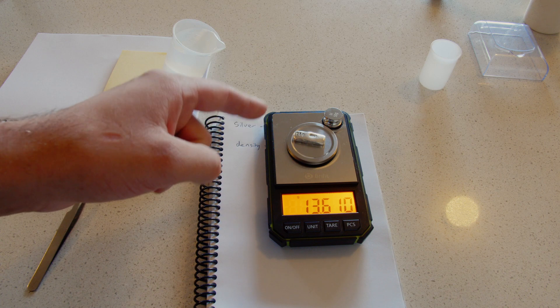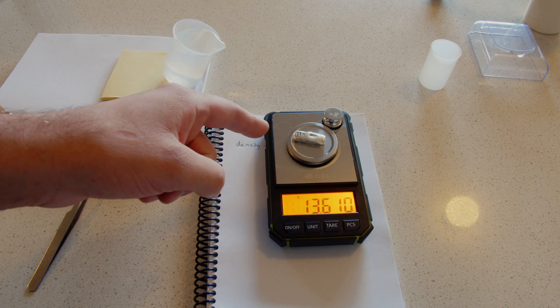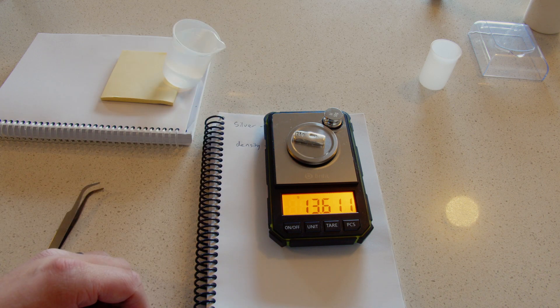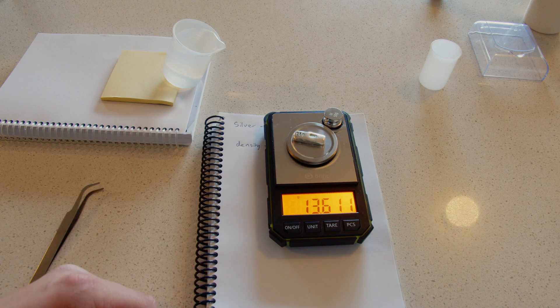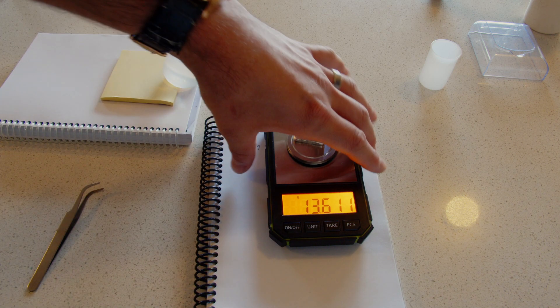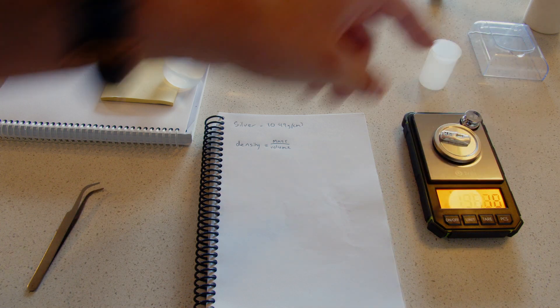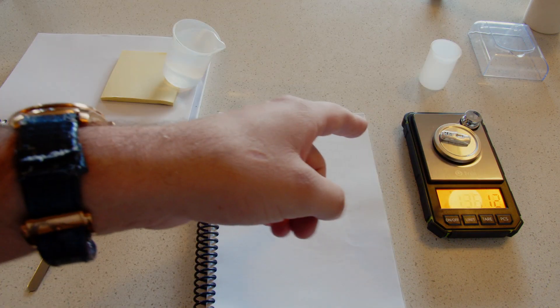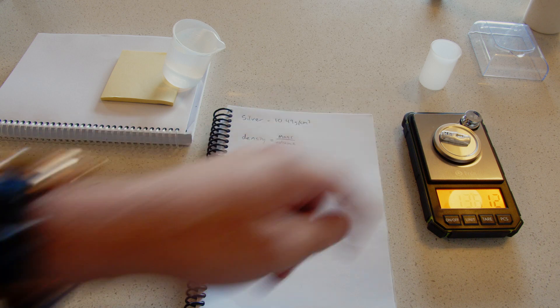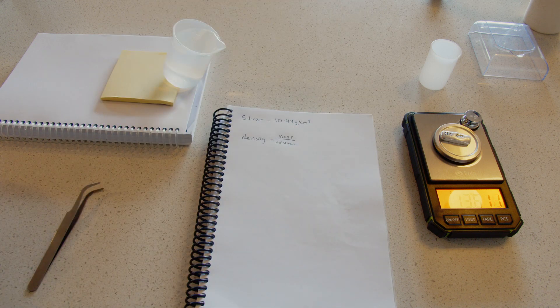So first of all, I'm cheated on that. I bought this off eBay. It said it was 21 grams of fine silver, but it's actually 13.61 grams. So I'm going to work out if this is actually silver or not, to find out if I was cheated on that side of it too.